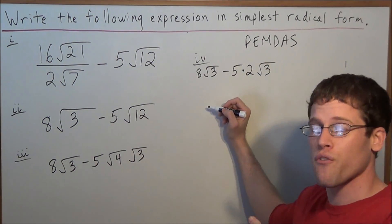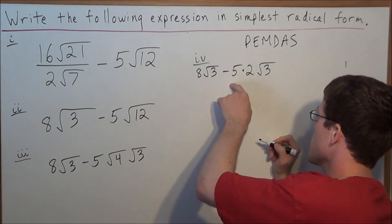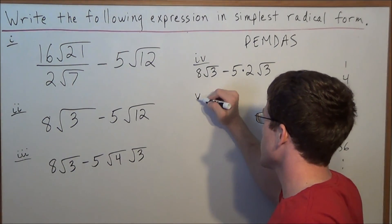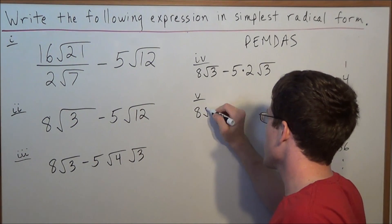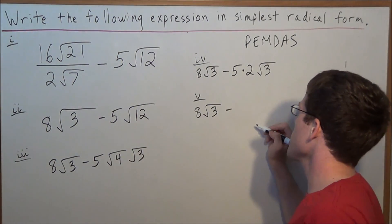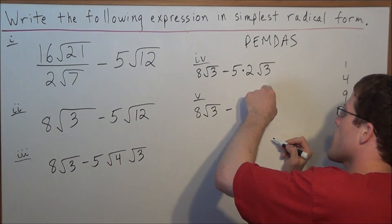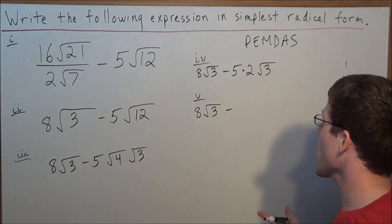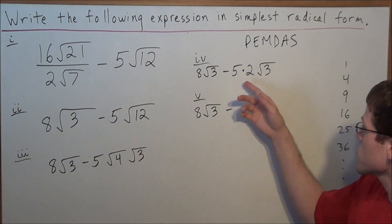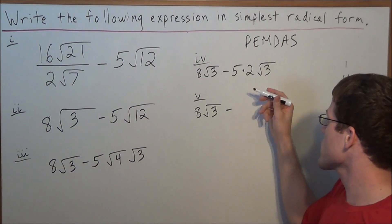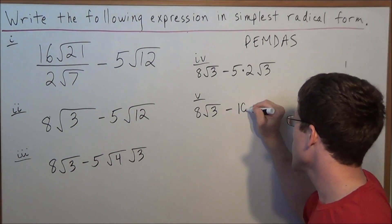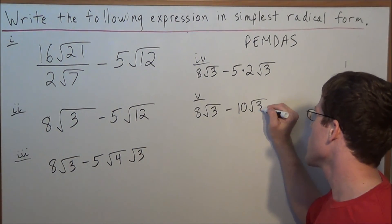So now as we go forward in this problem, all we have to do is multiply the numbers outside the radical. So we have 8 radical 3 minus, and now we have 5 times 2 times radical 3. But when we multiply radical expressions, we can multiply the numbers outside. So we have 5 times 2 is 10, so we have 10 radical 3.